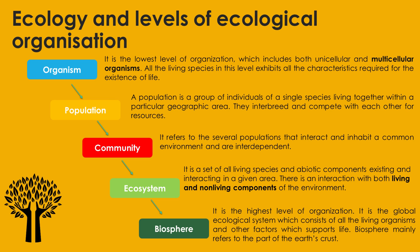With the first level, which is the lowest level of organization — the individual level or organism level — this includes both unicellular and multicellular. So here we're only referring to that individual species. Then when these groups of individuals come together and live within a particular area, we refer to them as population, but this only applies to individuals of a single species.